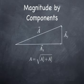And you all know how to get the length of a hypotenuse of a triangle given the short sides. It's just the Pythagorean theorem. The magnitude of A is the square root of the sum of the squares of the two sides. That's pretty easy.